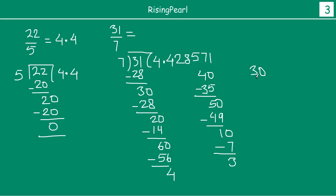And again you are noticing that now we came across the remainder 3 again. That was the first remainder. Now let's see whether it also starts to repeat. Let's continue the division a little bit longer. So 30.